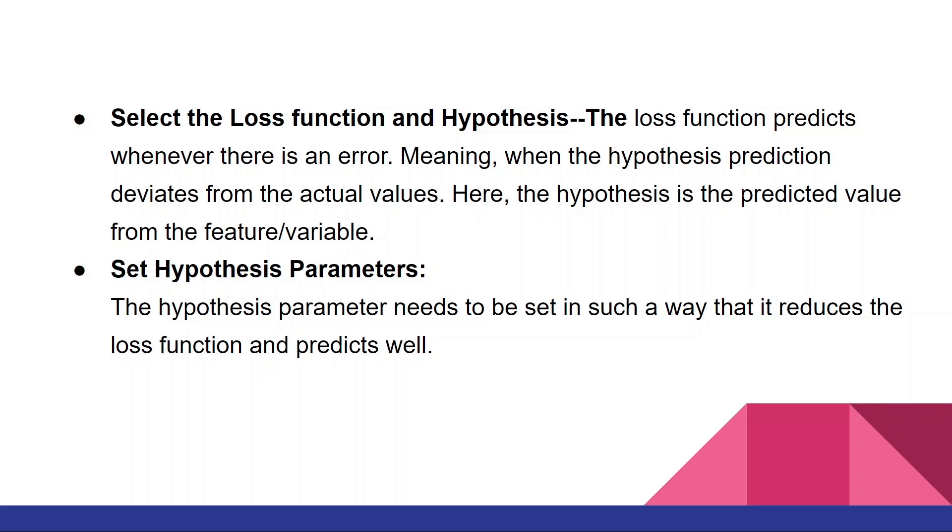Next we come to selecting the loss function and hypothesis. The loss function predicts whenever there is an error, meaning when the hypothesis prediction deviates from the actual values. Here the hypothesis is the predicted value from the feature or variable. Then we have to set the hypothesis parameters. The hypothesis parameter needs to be set in such a way that it reduces the loss function and predicts well.